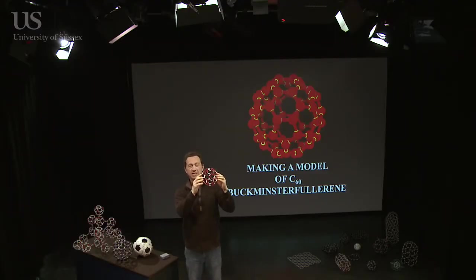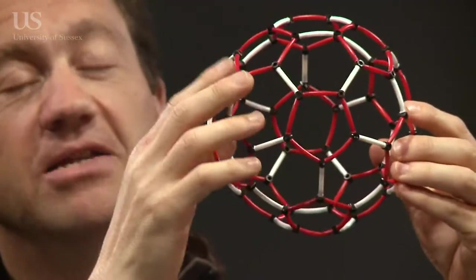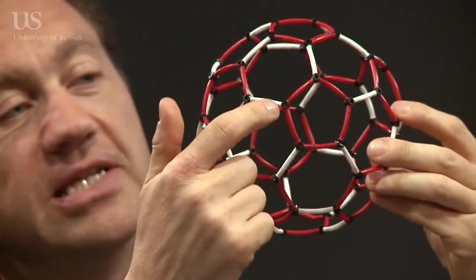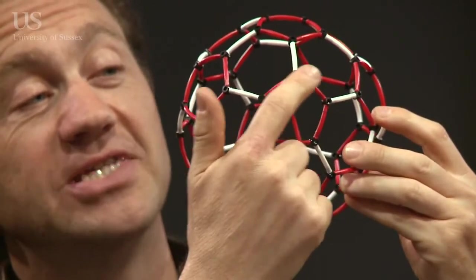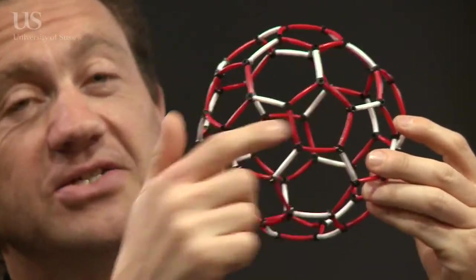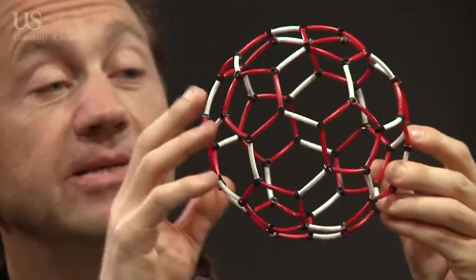Let me take you through the stages of making a model of buckminsterfullerene. I've got a beautiful model here, a molecular model of C60. You can see the little black atoms that represent the real atoms in the molecule, and there's also pentagon and hexagon rings made by bringing the straws together and plugging this whole thing together.